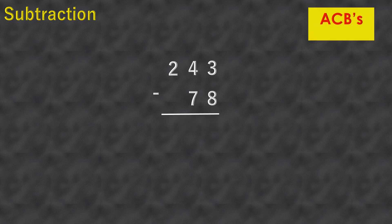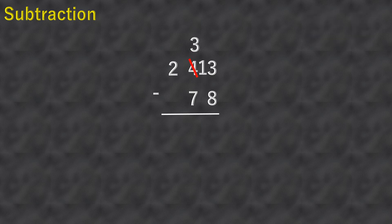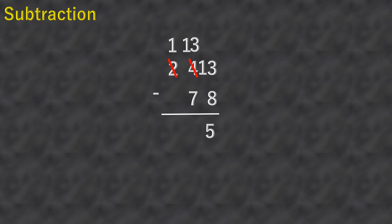Two hundred forty-three minus seventy-eight. Three minus eight is not possible, so we borrow from the four — four becomes three and three becomes thirteen. Thirteen minus eight equals five. Three minus seven is also not possible, so we borrow from the two — two becomes one and three becomes thirteen. Thirteen minus seven equals six. Then bring down one. So two hundred forty-three minus seventy-eight equals one hundred sixty-five.